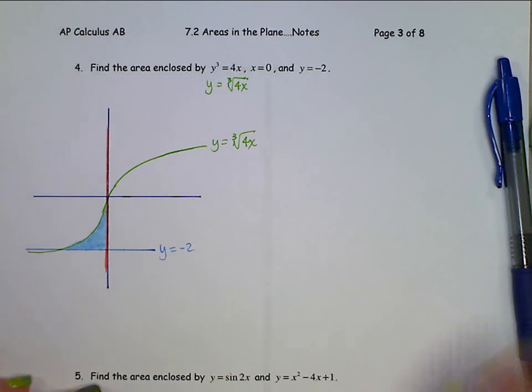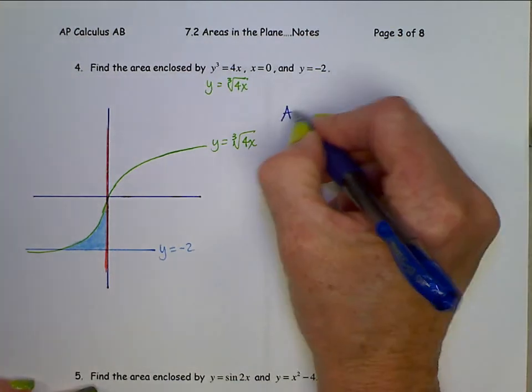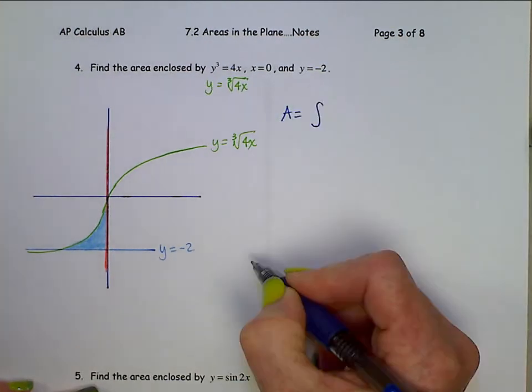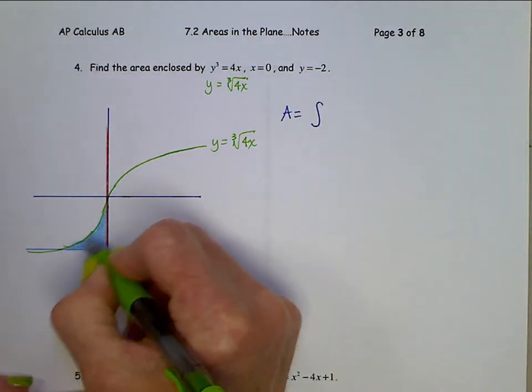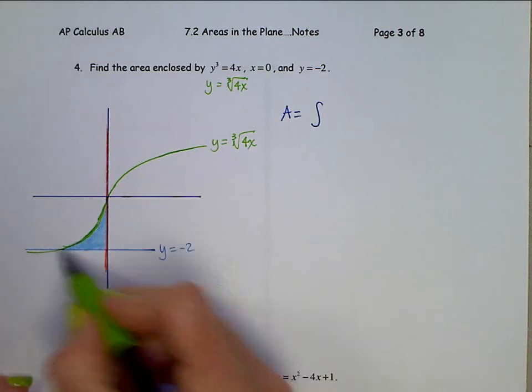So the region that is enclosed by these three pieces is this section down here. And when we go to find that area, we are going to have to integrate top function minus bottom function. For that blue region, which function is on the top?